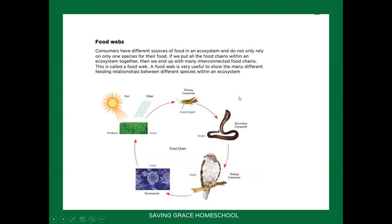So this is a food chain showing exactly what eats what. You have your sun and water, and that is your producer, which is grass. Then your primary consumer is your grasshopper, that eats the grass. A snake, which is your secondary consumer, eats your primary consumer. Then you have a hawk, which is your tertiary consumer — the predator — that eats the snake. And once the hawk dies, you have your decomposer, which is fungi, which feeds off the dead bird. Then the decomposer releases nutrients back that helps the grass grow, and that's how the chain continues.